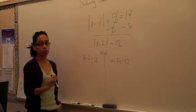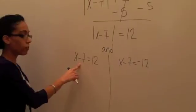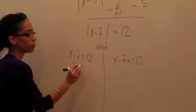As we did before, all we have to do is do the opposite. Opposite of minus 7 is plus 7 to both sides.